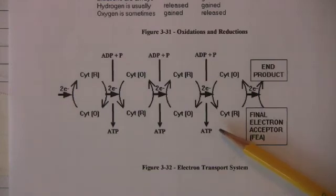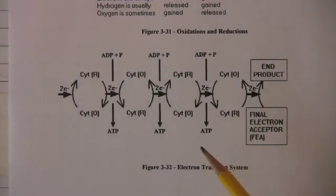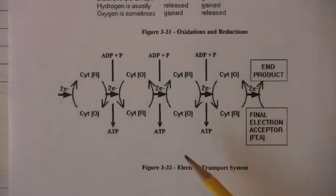If the generation of ATP stops, what happens to the cell? It dies. What happens to the human when the cell dies? The human dies.